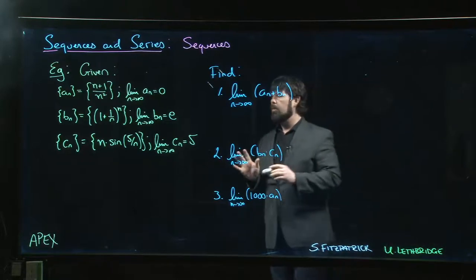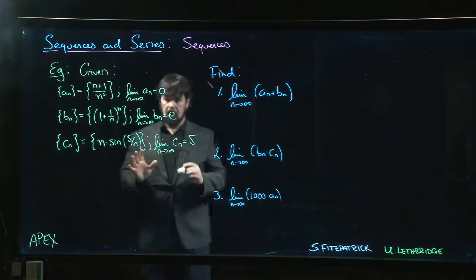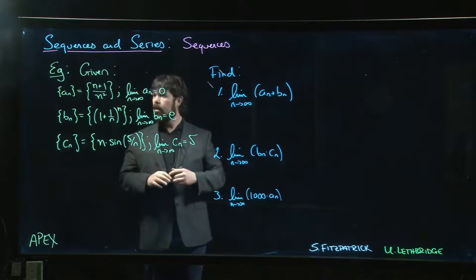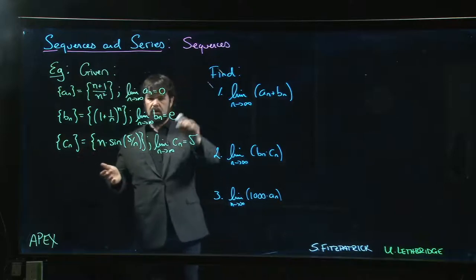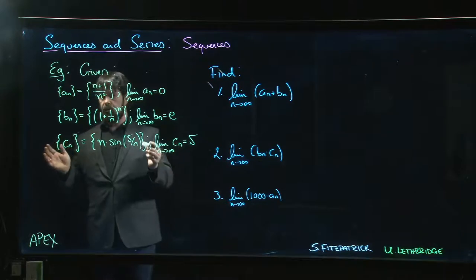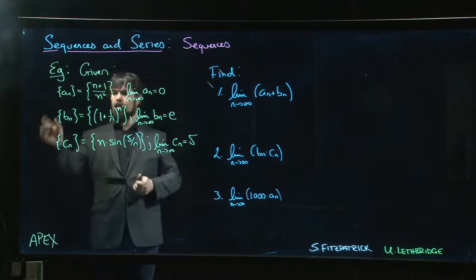In this example we're going to work with some of the limit properties for limits of sequences that we saw in the previous video. We're given three sequences and we're told their limits. Some of these we can work out if we absolutely had to, but they're given to us right down here.